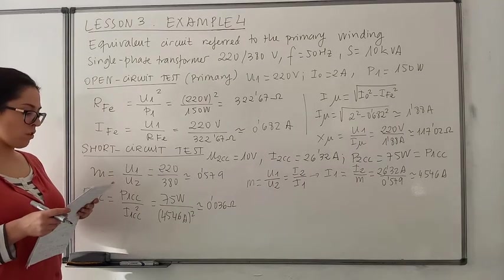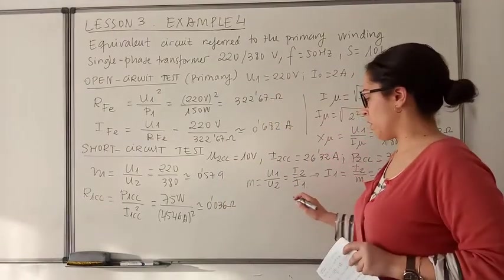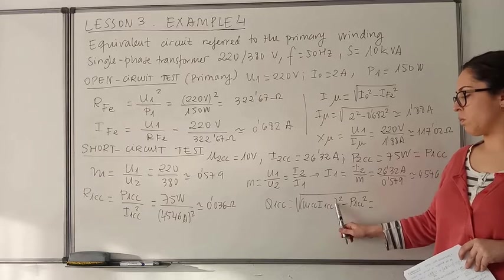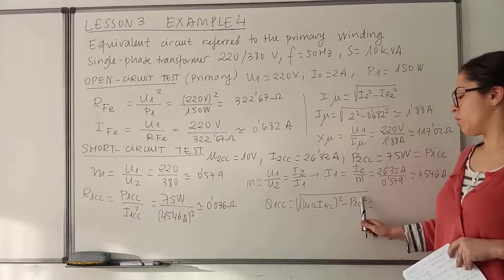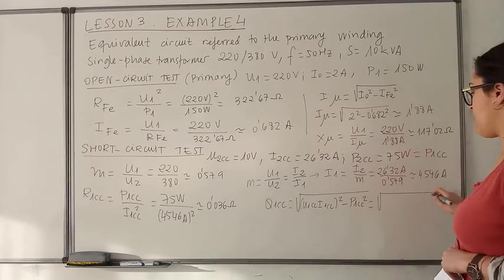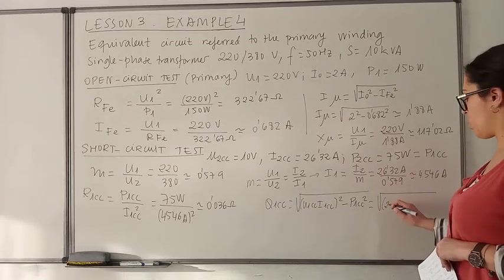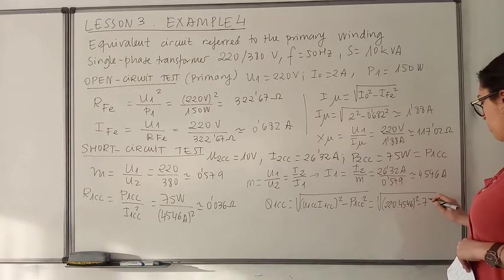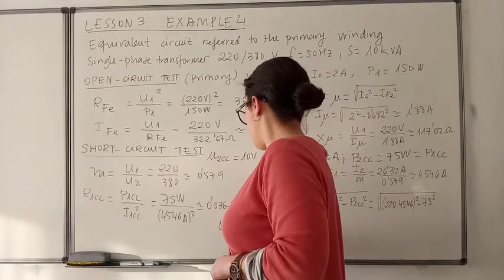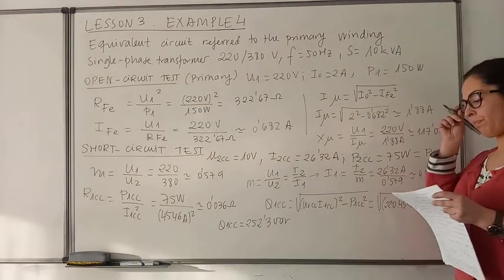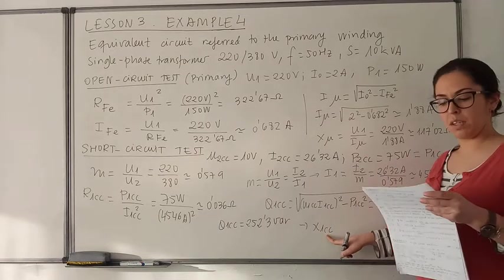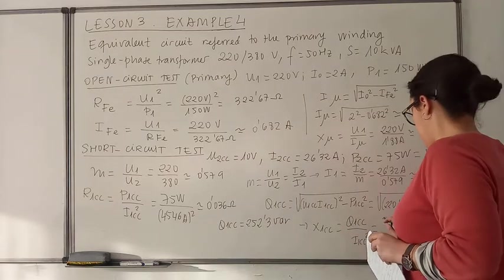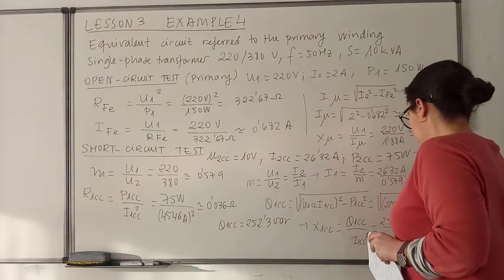Now that we have the short circuit resistance, we can get the value of the reactive power in the short circuit test. This is obtained with the expression: the square root of the apparent power squared minus the active power squared, all in the primary winding. The apparent power is the voltage times the current, with voltage of 220 V and current of 45.46 A, minus the active power of 75 W squared. The short circuit reactance in the primary winding will then be the reactive power divided by the square of the current.